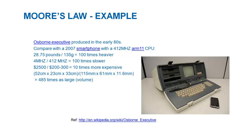As a concrete example of this, in the 1980s we had the Osborne Executive laptop — very powerful and top-of-the-line at the time. Comparing it with the 2007 iPhone, we notice striking differences. The Osborne Executive ran at 4 MHz whereas the iPhone ran at over 400 MHz — 100 times faster — even though the iPhone is 100 times smaller in width and 10 times less expensive.